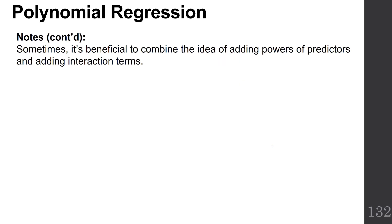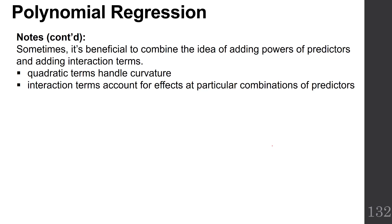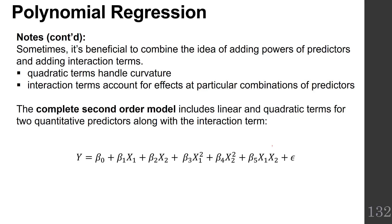Sometimes it's beneficial to combine the idea of adding powers of predictors and adding interaction terms. Quadratic terms handle curvature. Interaction terms account for effects at particular combinations of predictors. We're going to introduce the complete second-order model. This includes linear and quadratic terms for two quantitative predictors along with the interaction term. Notice we've got an X₁ and X₂, X₁², X₂², and then the interaction X₁ × X₂.